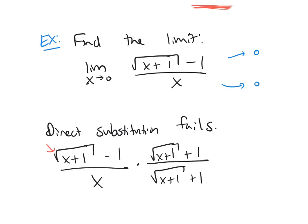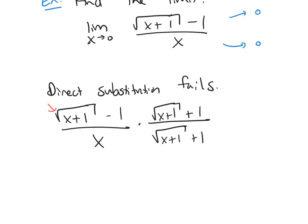So really I haven't changed anything here. I'm multiplied by 1 essentially. But now, if you FOIL out the top, you'll get x plus 1 minus 1. And I'm not going to distribute in the denominator.